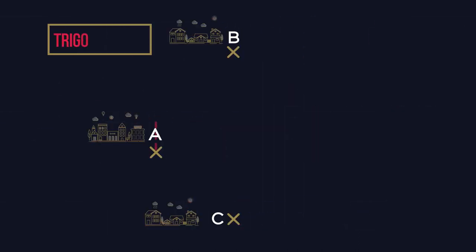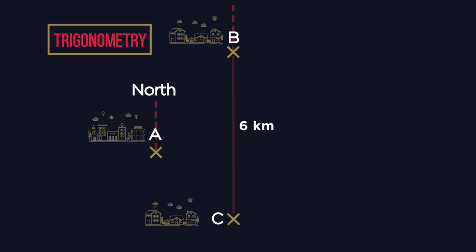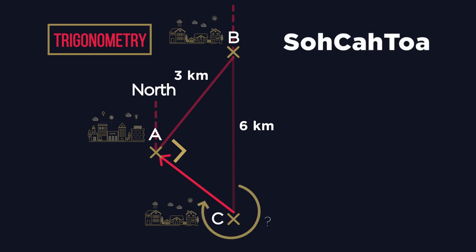We can also use trigonometry. Town B is six kilometres due north of town C. Town A is three kilometres from town B. The bearings of A from towns B and C bisect perpendicularly. What's the bearing of town A from C? Using SOHCAHTOA, we can see we need to find the size of angle BCA.